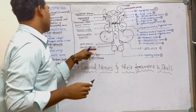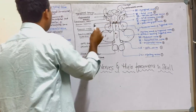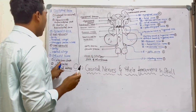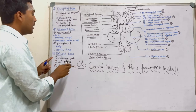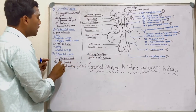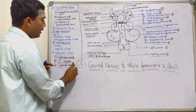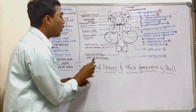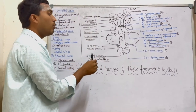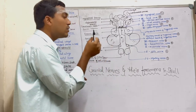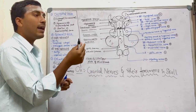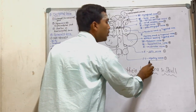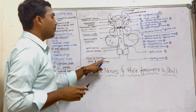Anteriorly we have the ethmoid bone, which consists of three parts: the cribriform plate, the perpendicular plate, and the lateral masses. The cribriform plate of the ethmoid bone is very important — it contains small sieves through which olfactory fibers pass, forming the olfactory nerve.